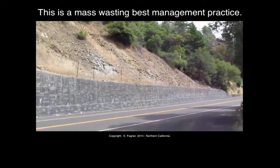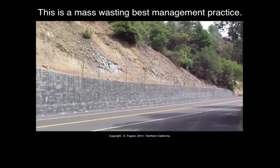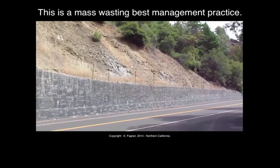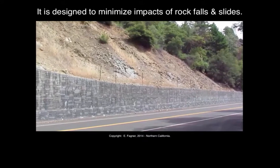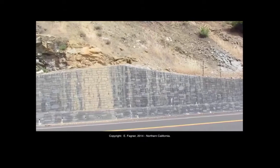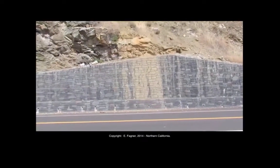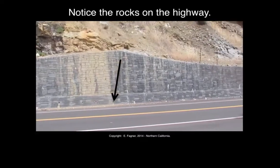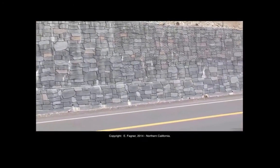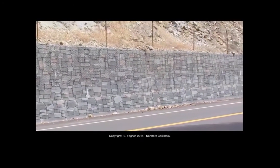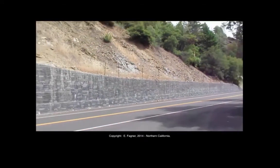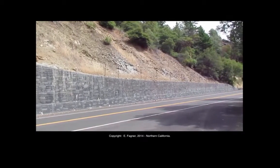Best management practices such as this retaining wall and fence are simply there to try to help protect human health and the environment from any kind of rock slides or rock falls. There's signage everywhere that says 'landslide area,' and this is there to try to keep rocks out of the highway as much as possible. If you look at the base, you'll notice some rock clutter where material has already fallen down. These are all over the place to try and help reduce the potential for mass wasting.